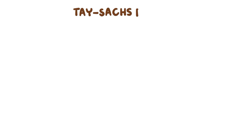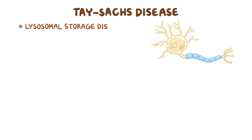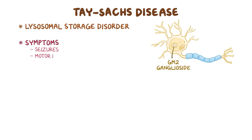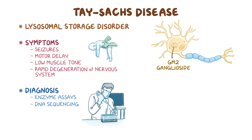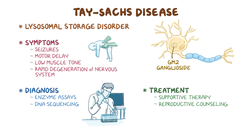As a quick recap: Tay-Sachs disease is a lysosomal storage disease that results in a buildup of GM2 ganglioside in neurons of the central nervous system. This results in seizures, motor delay, low muscle tone, and rapid degeneration of the nervous system. Diagnosis is achieved through enzyme assays and DNA sequencing. There is no cure for Tay-Sachs disease, and treatment involves supportive therapy. Reproductive counseling, however, is available.